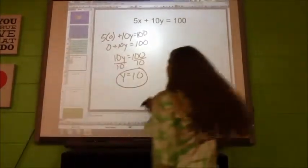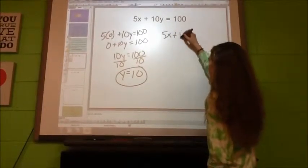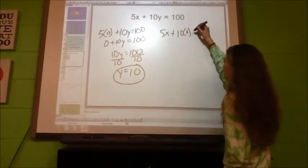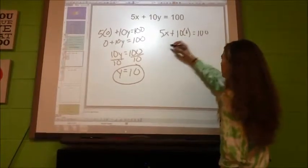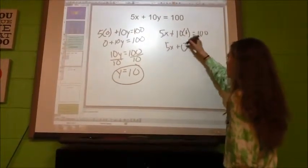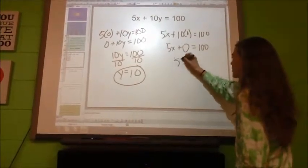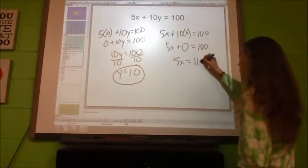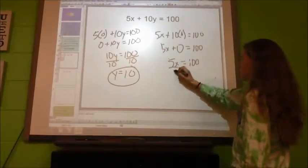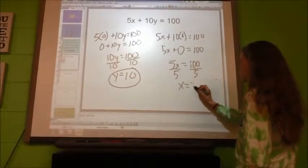To find X you have to do 5X plus 10 times 0 equals 100. 5X plus 10 times 0 is 0 equals 100. 5X plus 0 is 5X equals 100. You divide by 5 on both sides and X equals 20.